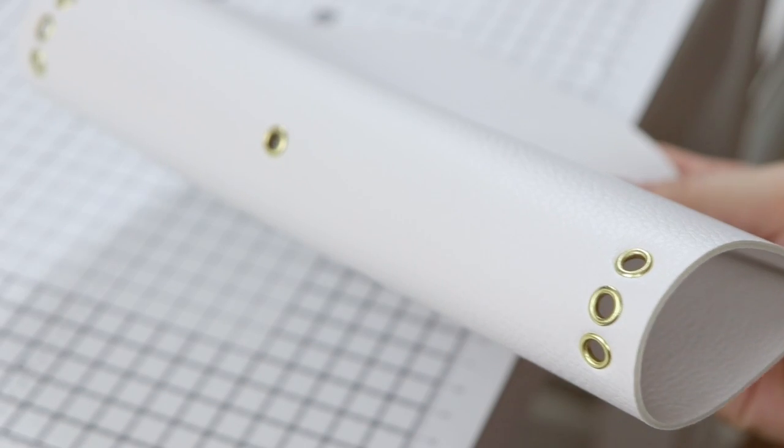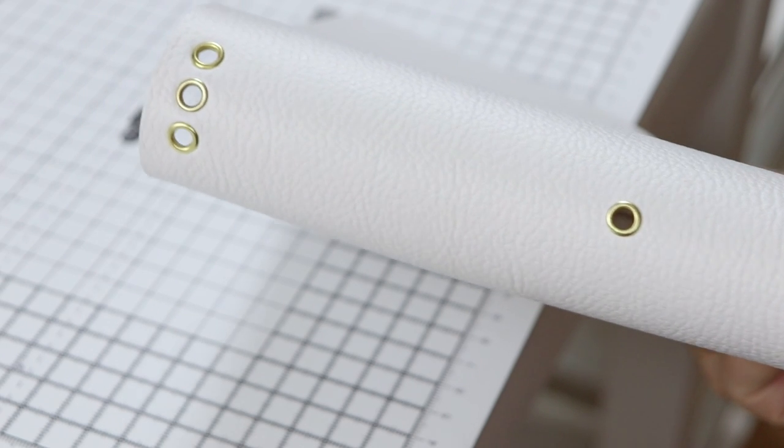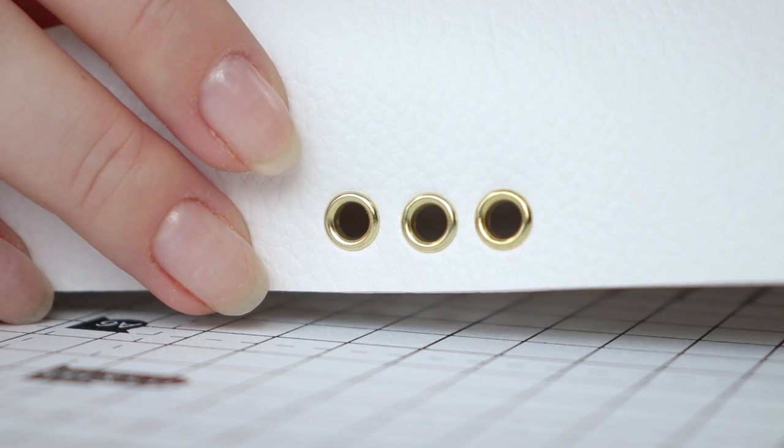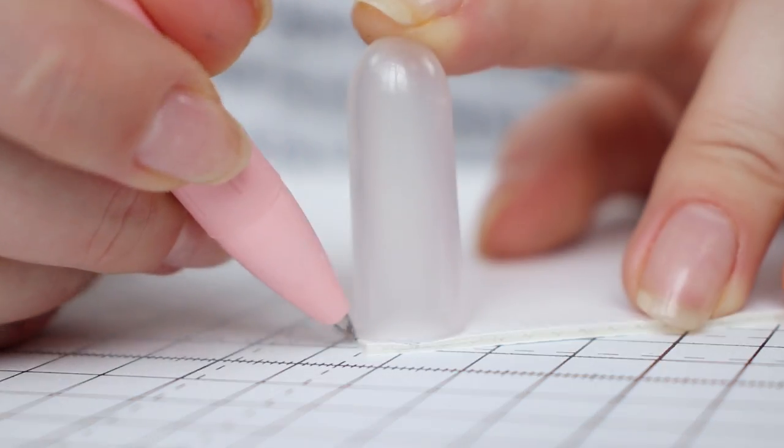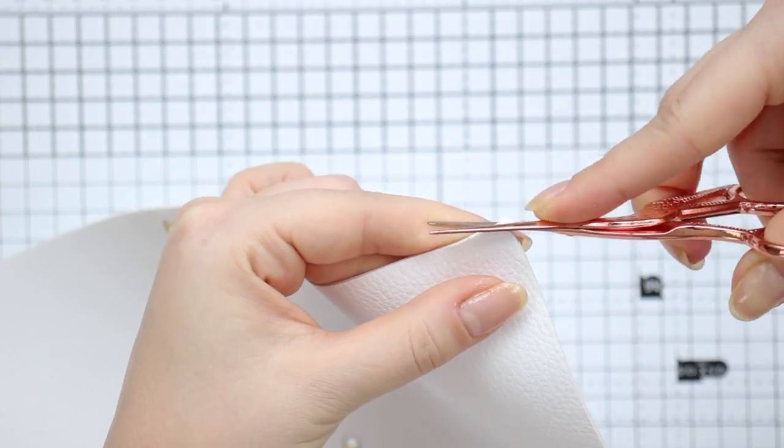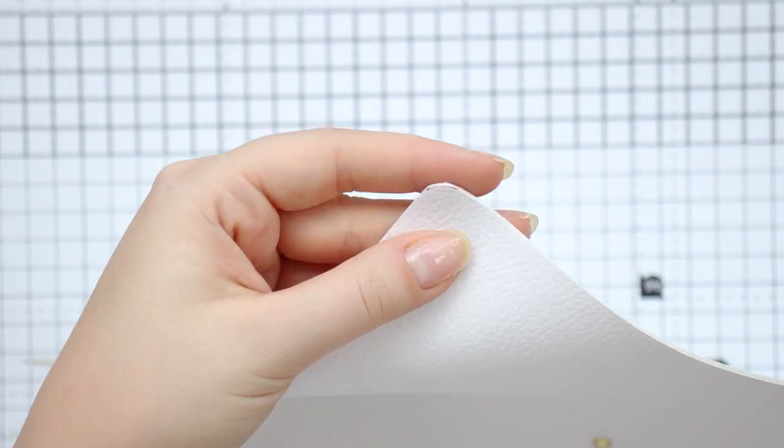The eyelets are of course optional, but they do help protect the material from getting damaged by the elastic, plus it gives it a more polished look. Finally, I'm tracing a rounded cap to help me round the corners and I'm just using a pair of scissors to cut them off.